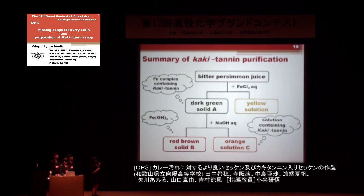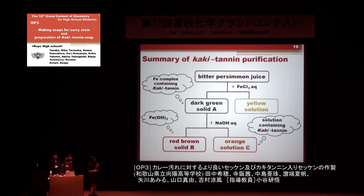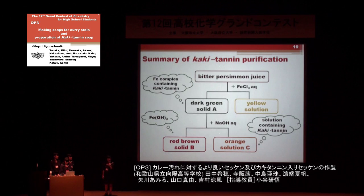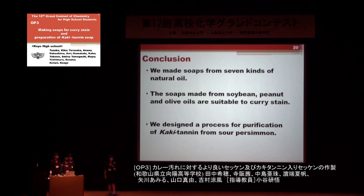In summary, the reaction of persimmon juice with iron chloride gave a precipitate of the iron-kakitanin complex. The reaction of the iron-kakitanin complex with sodium hydroxide led to precipitation of iron hydroxide and liberation of kakitanin. The alkaline kakitanin solution can be used for soap making, and orange soap containing kakitanin was obtained. We would like to evaluate the kakitanin-containing soap in future work.